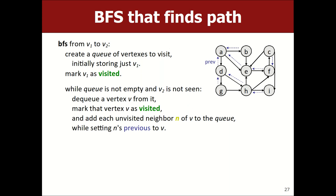For tracking visited vertices, make a set and put visited vertices into it — the graph doesn't magically do this for you. Similarly for the 'previous' map. If you have design control over the graph library, you could add a boolean 'visited' flag to vertices. But over-customizing for path searching might make the library less general for other uses.